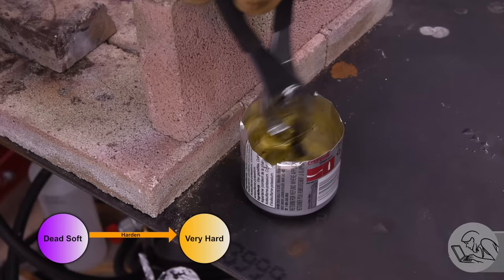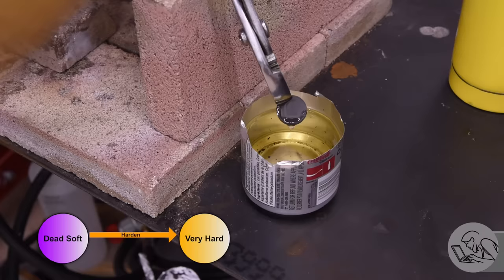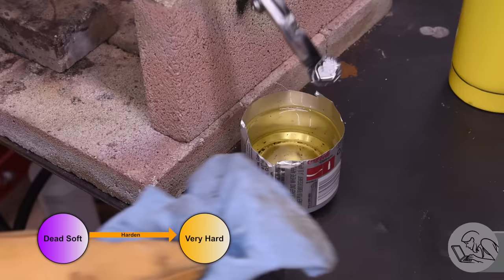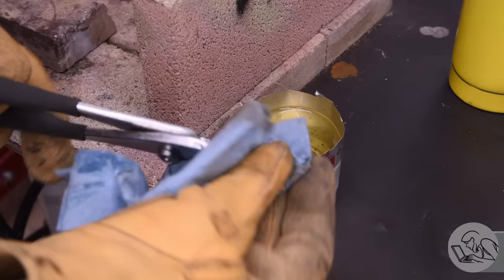For quenching long skinny things, holding them vertically and moving them up and down can help reduce the warping that can occur in the tool steel when you quench it. Once you've quenched it long enough for it to be cooled down, it's going to come out all black and messy. Don't worry about it. We're going to clean that off in a minute.